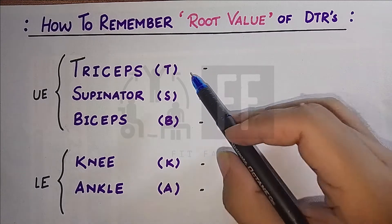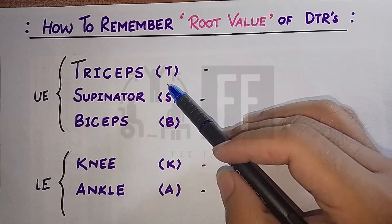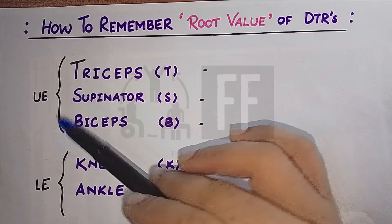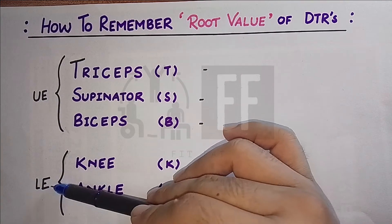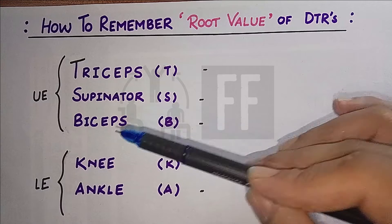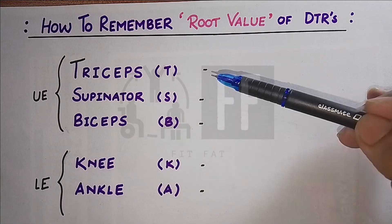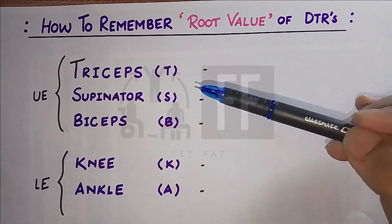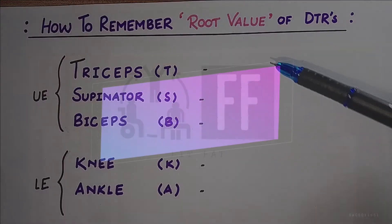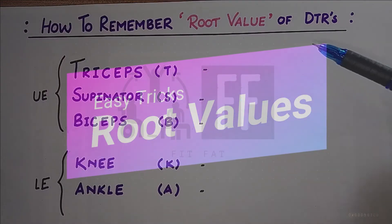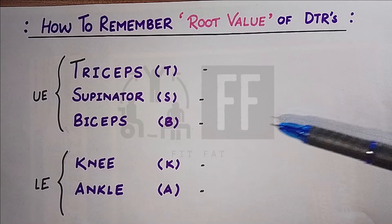We all know there are five types of DTR — namely triceps, supinator, and biceps for the upper extremity, and knee and ankle for the lower extremity — which are checked mostly in a clinical setup. The issue is not how to check these deep tendon reflexes, as we have seen it many times, but the main problem is that as students we sometimes forget the root values of these reflexes.